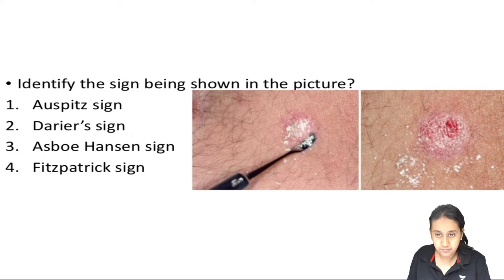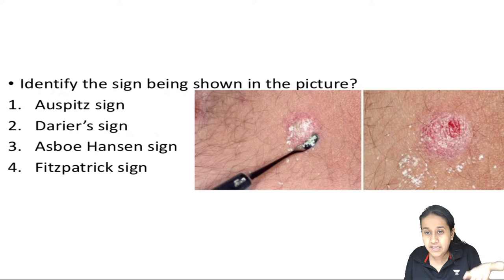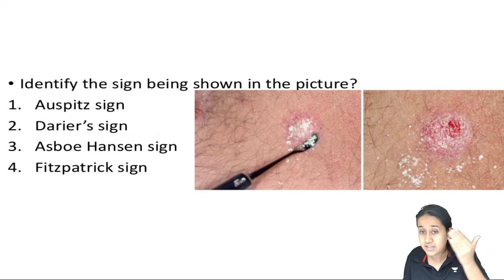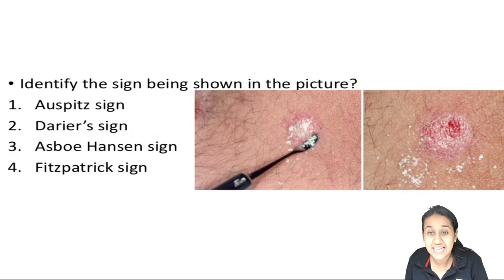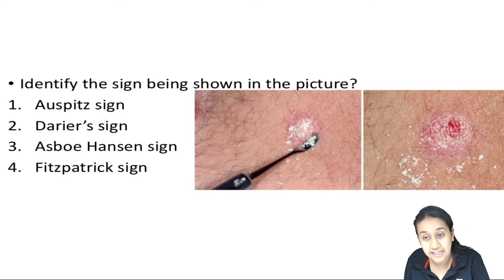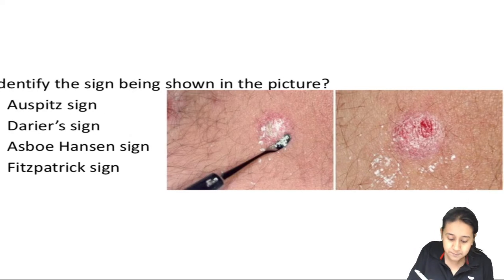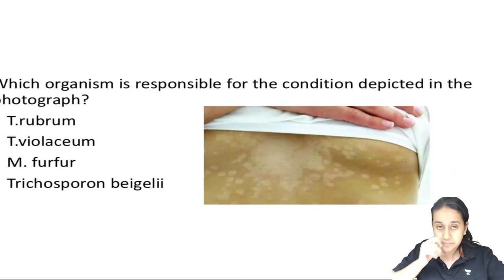Identify the sign being shown in this image: we are scraping or scratching a plaque and the scales increase. When we remove these scales we can see pinpoint bleeding areas. When you rub or grattage an erythematous scaly plaque, there is sudden exacerbation of scales - this is the candle wax or candle grease sign. The pinpoint bleeding spot is the Auspitz sign. The correct answer is option 1: Auspitz sign positive.